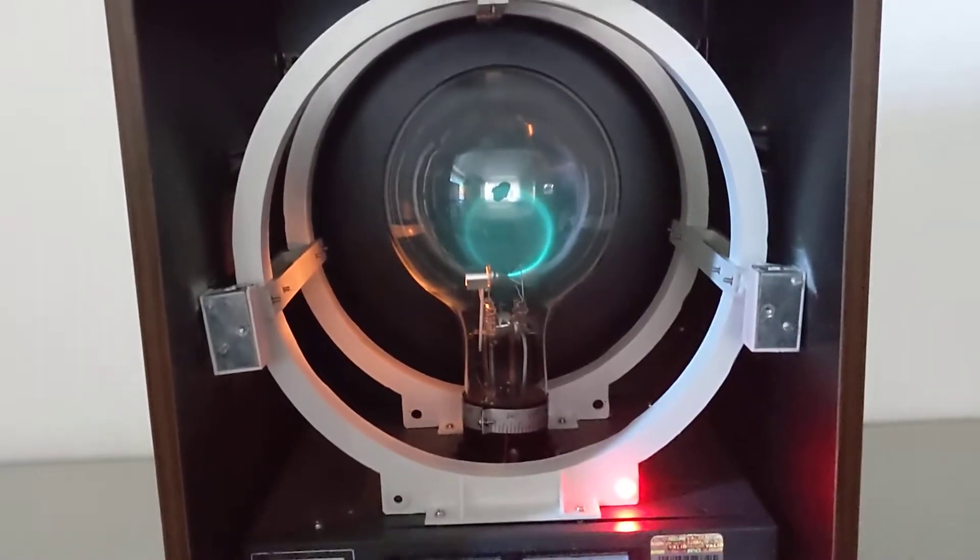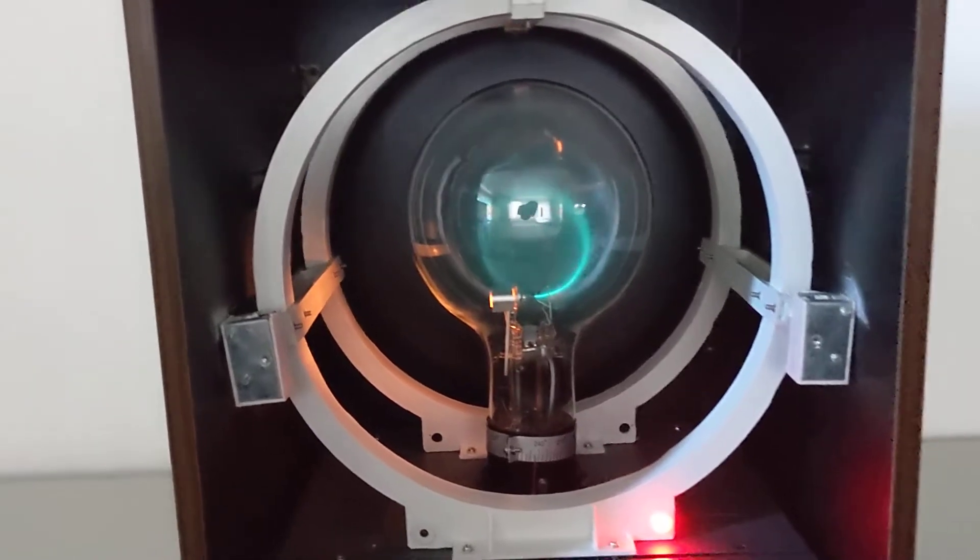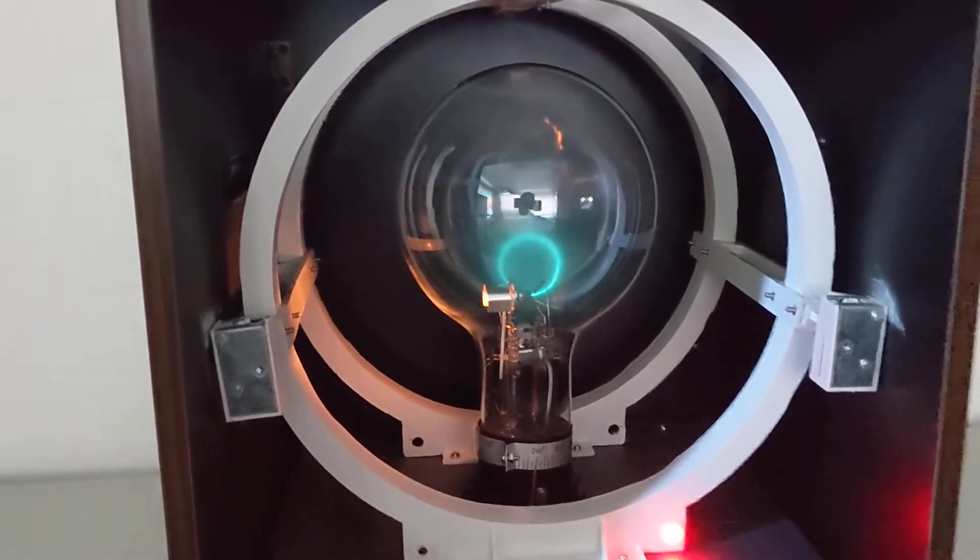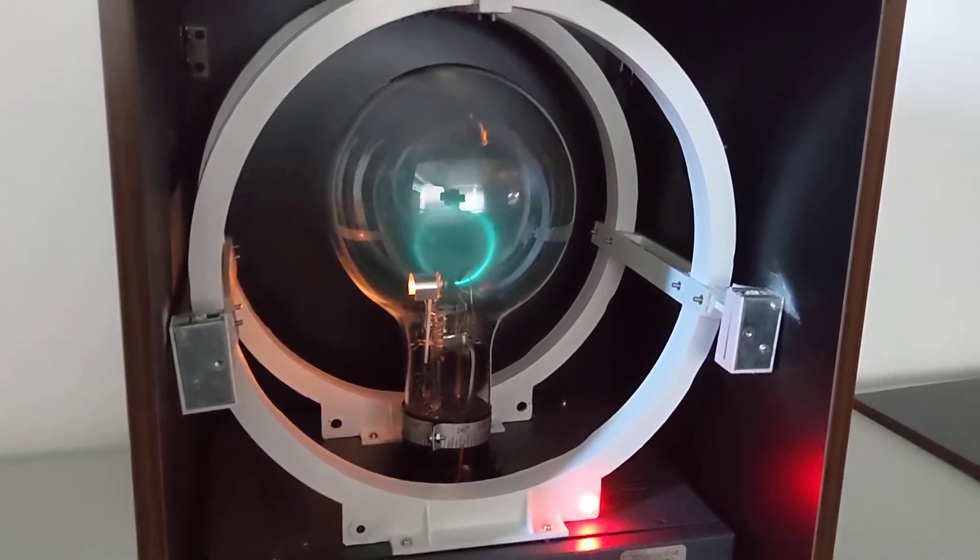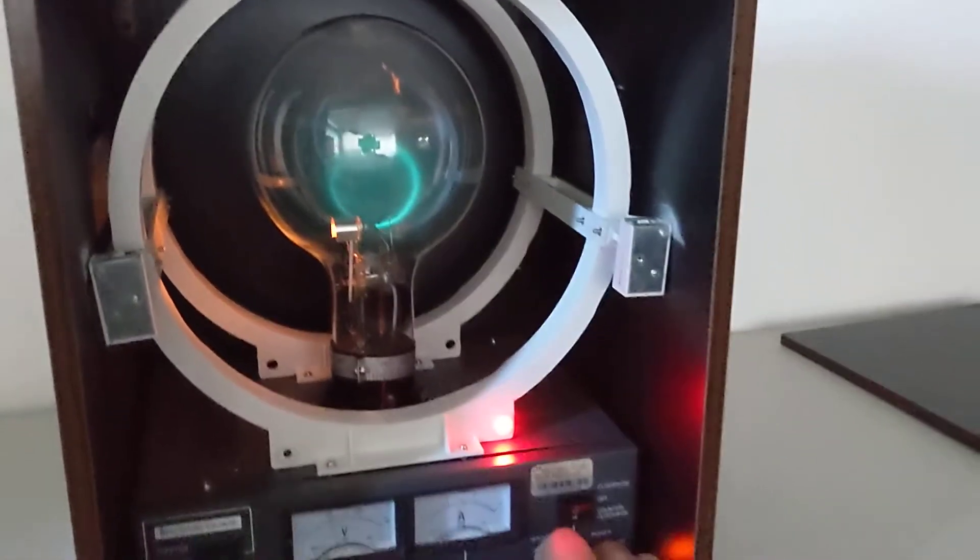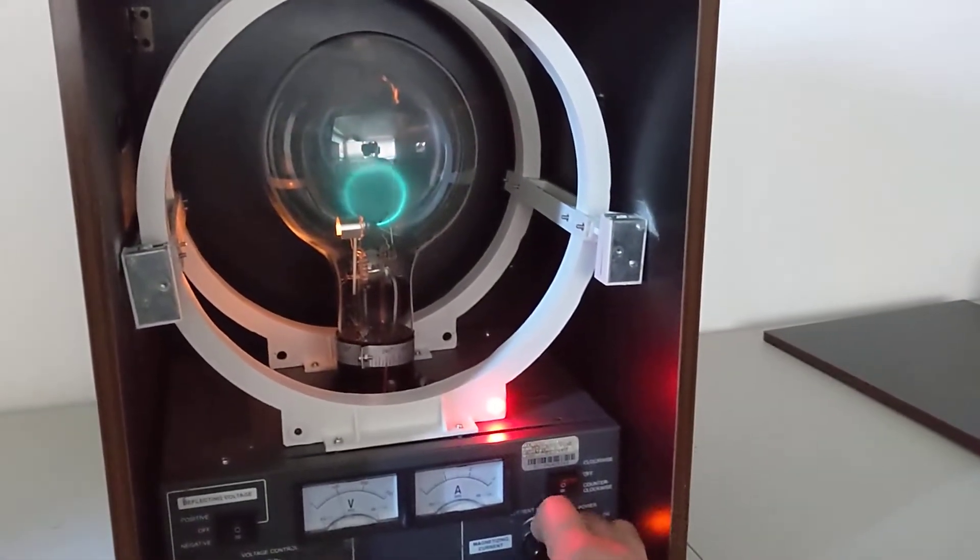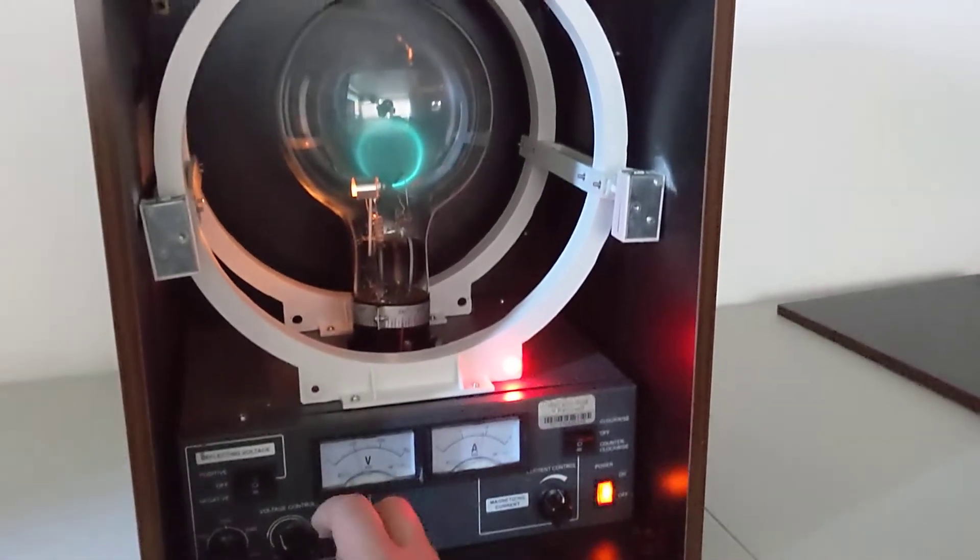And by changing the magnetic field, you change the radius that the electrons orbit. And you can adjust the field, and you can adjust the accelerating voltage.